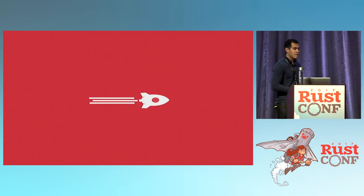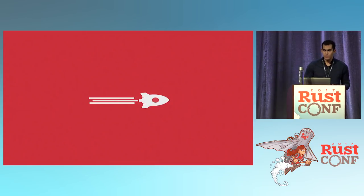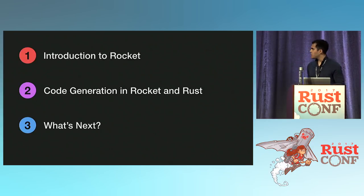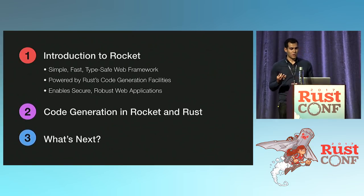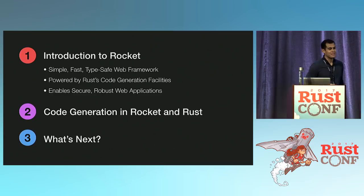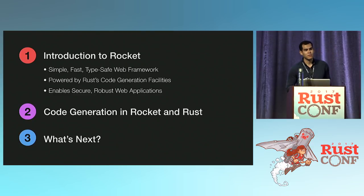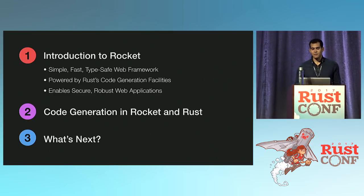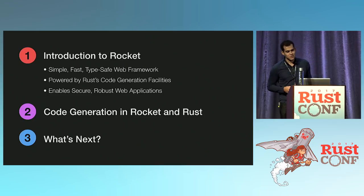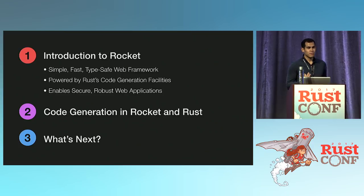If we can use code generation well, then we can get good applications and good software. The way I want to structure this talk is in three stages. First, I want to introduce you to Rocket — a simple, fast, and type-safe web framework for Rust. I'll say a bit about what I mean by simple and type-safe. Fast is self-descriptive. And it's powered by Rust code generation.